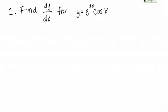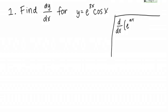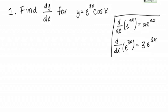We have e to the 3x and we have cosine x. Before we dive in and take the derivative of this function as a whole, let's quickly think about the derivative of each piece separately. Remember the rule that the derivative of e to the ax, where a represents a number, is ae to the ax. So the derivative of e to the 3x is just 3e to the 3x.